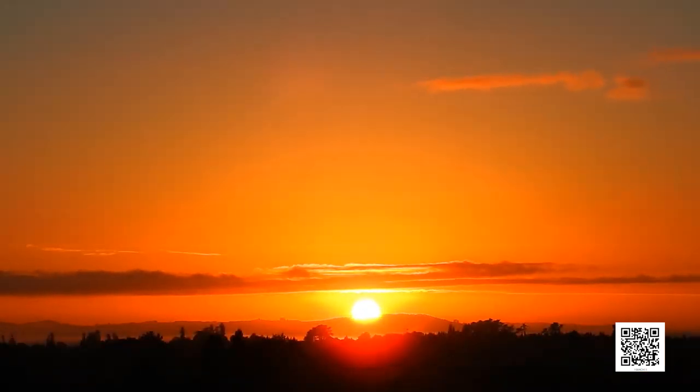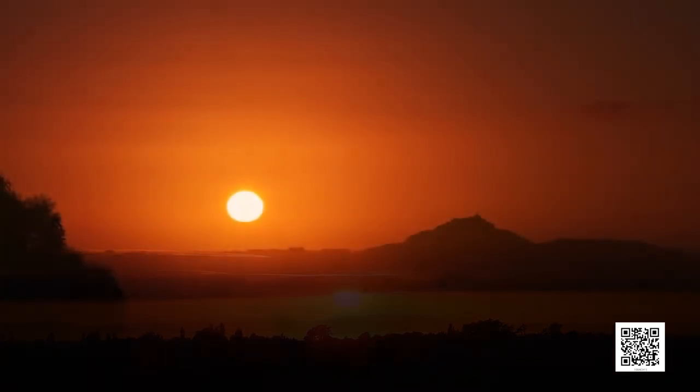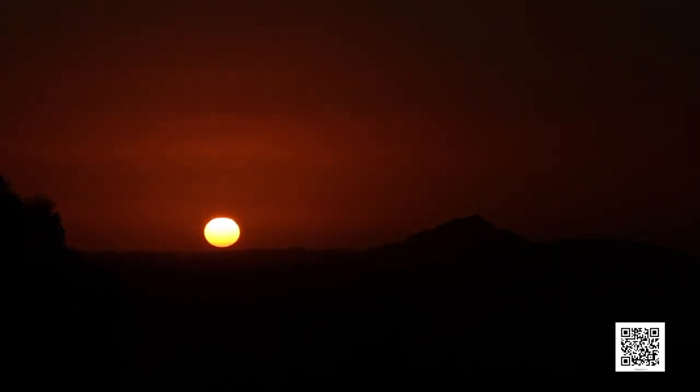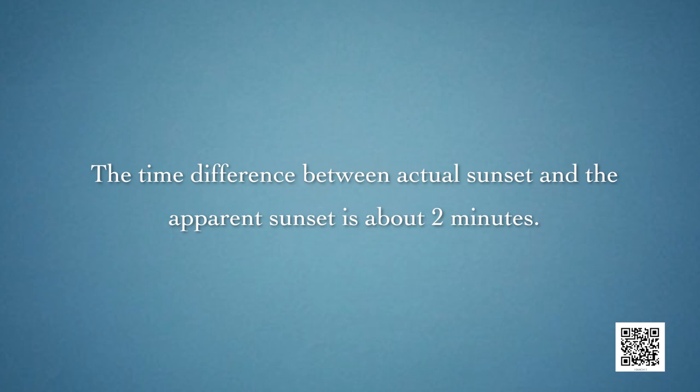Let us talk about our favourite star — the sun. The sun is visible to us about 2 minutes before the actual sunrise and about 2 minutes after the actual sunset. By actual sunrise we mean the actual crossing of the horizon by the sun. The horizon is the line at which the earth's surface and the sky appear to meet. The time difference between actual sunset and apparent sunset is about 2 minutes.